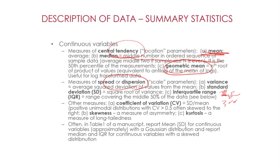Skewness is a measure of asymmetry, and kurtosis is a measure of the long-tailedness of a distribution. Often in a research paper, we put summary statistics in Table 1. This table usually reports mean and standard deviation for continuous variables that are approximately or normally distributed, and median and interquartile range for continuous variables with a skewed distribution.